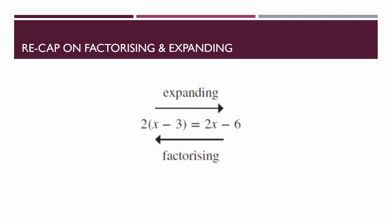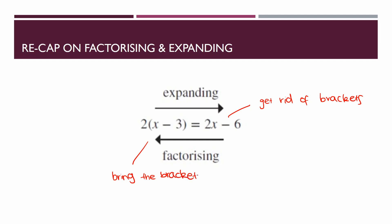Here's a quick visual representation: 2(x - 3) equals 2x - 6. If I expand that expression, it would be 2x - 6. If I factorize 2x - 6, it would be 2(x - 3). Expanding is where you get rid of the brackets, and factorizing is where you bring the brackets back. That's the clear difference between expanding and factorizing.